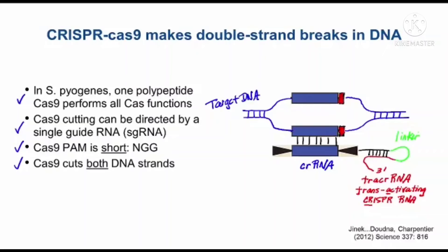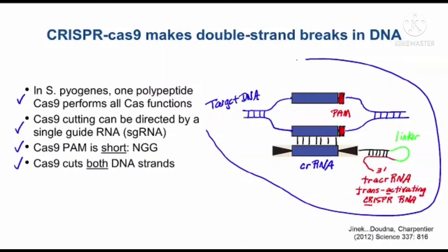Once you have all these parts ready to go and the target DNA includes PAM sequences, then the whole thing is held together by the Cas9 protein to actually cut both strands of the target DNA.